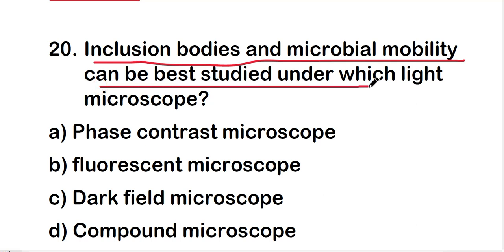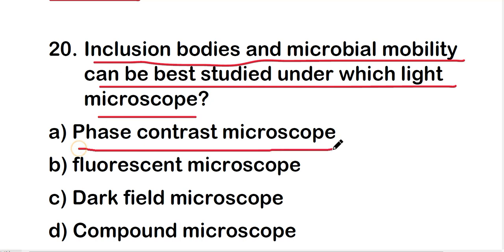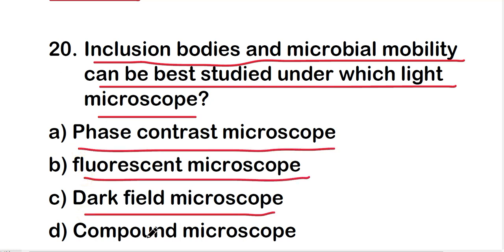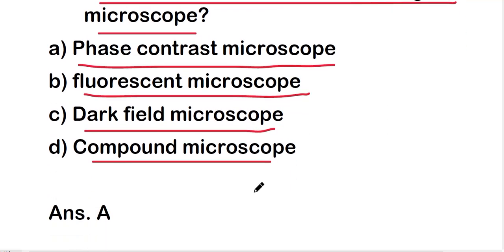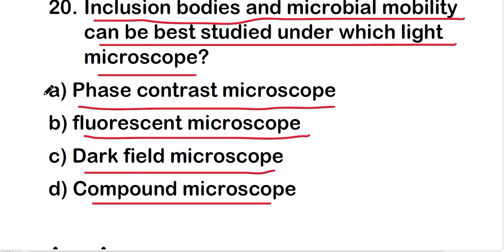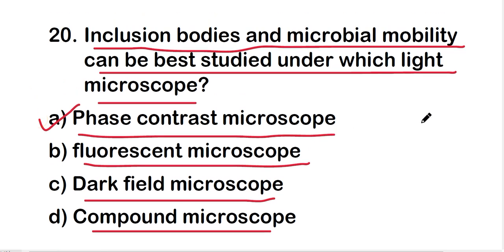The last question: inclusion bodies and microbial motility can be best studied under which light microscope — phase contrast microscope, fluorescent microscope, dark field microscope, or compound microscope? The right answer is option A — phase contrast microscope. Inclusion bodies and microbial motility can be best studied under the phase contrast microscope. These are all 20 questions of this Part 1 video.